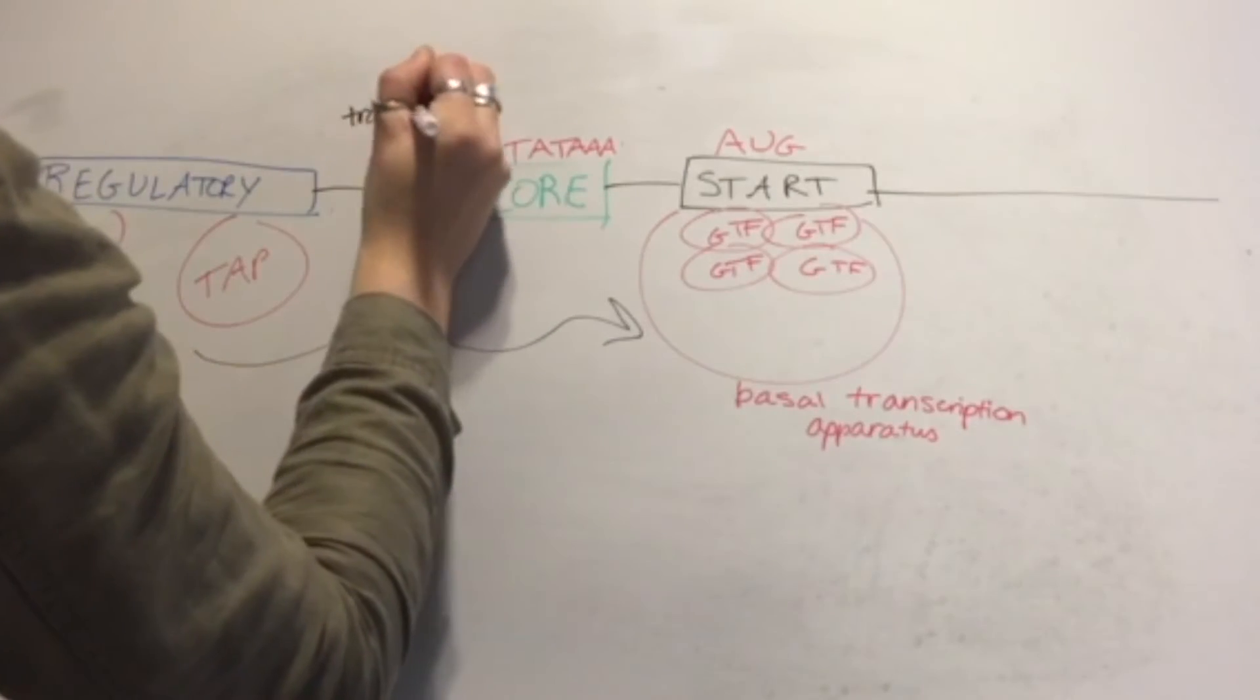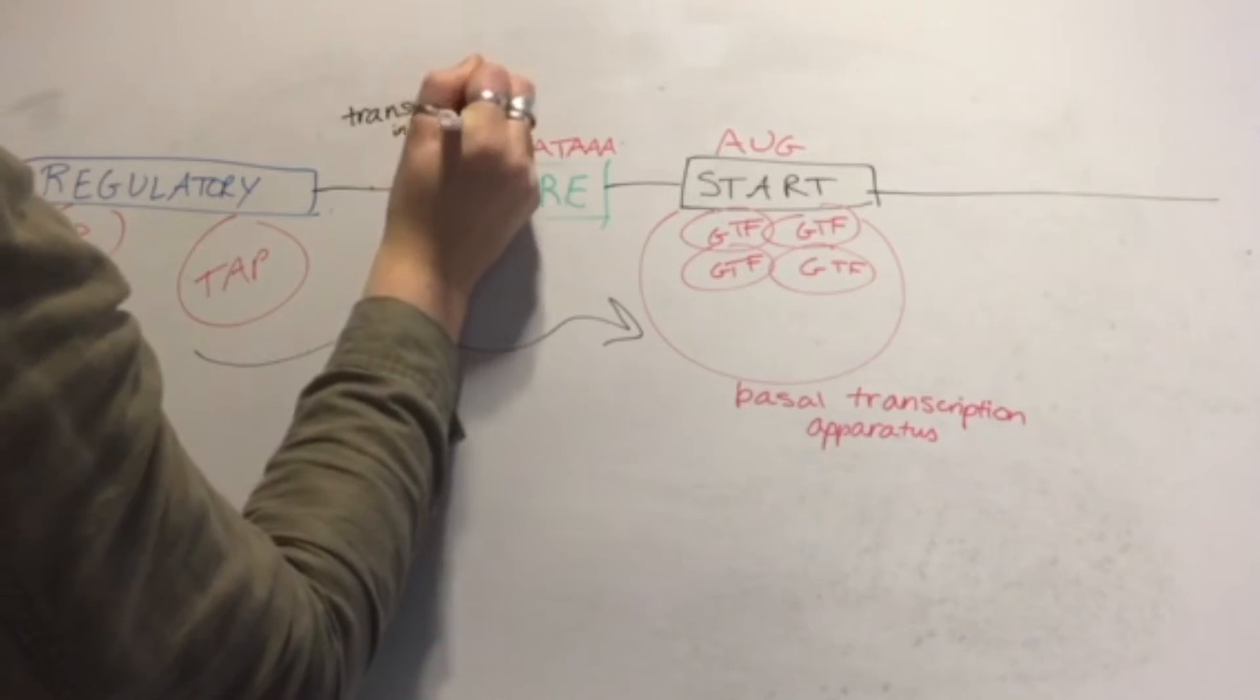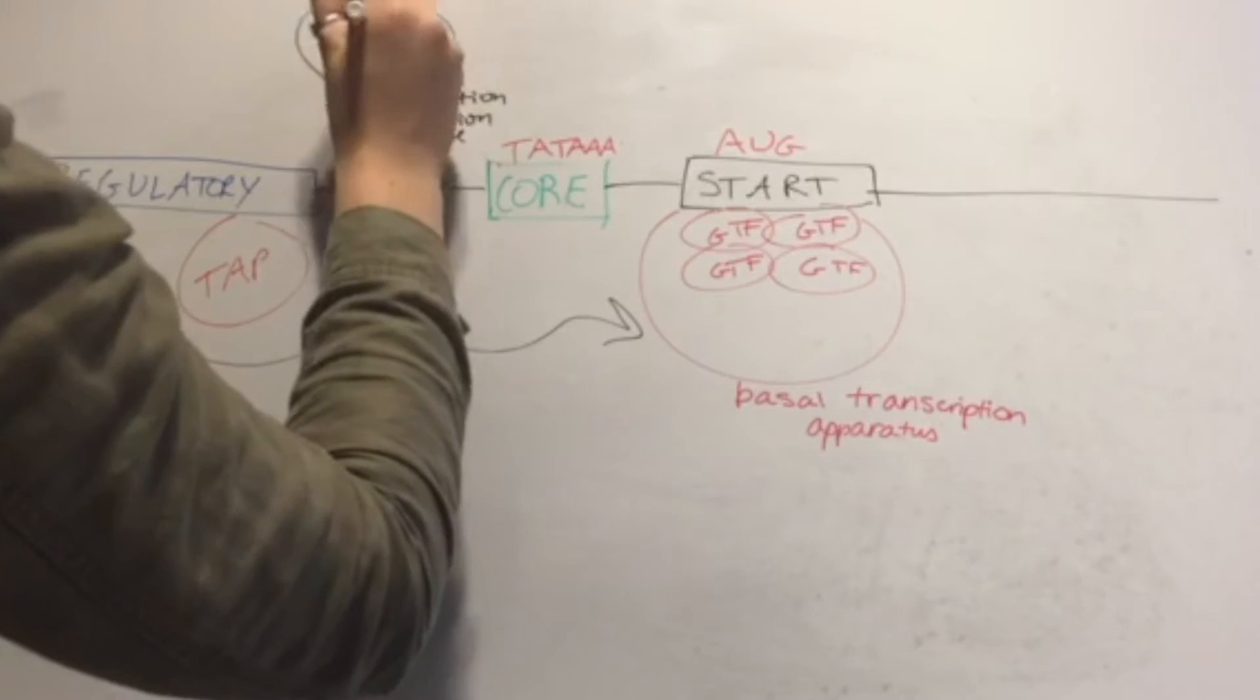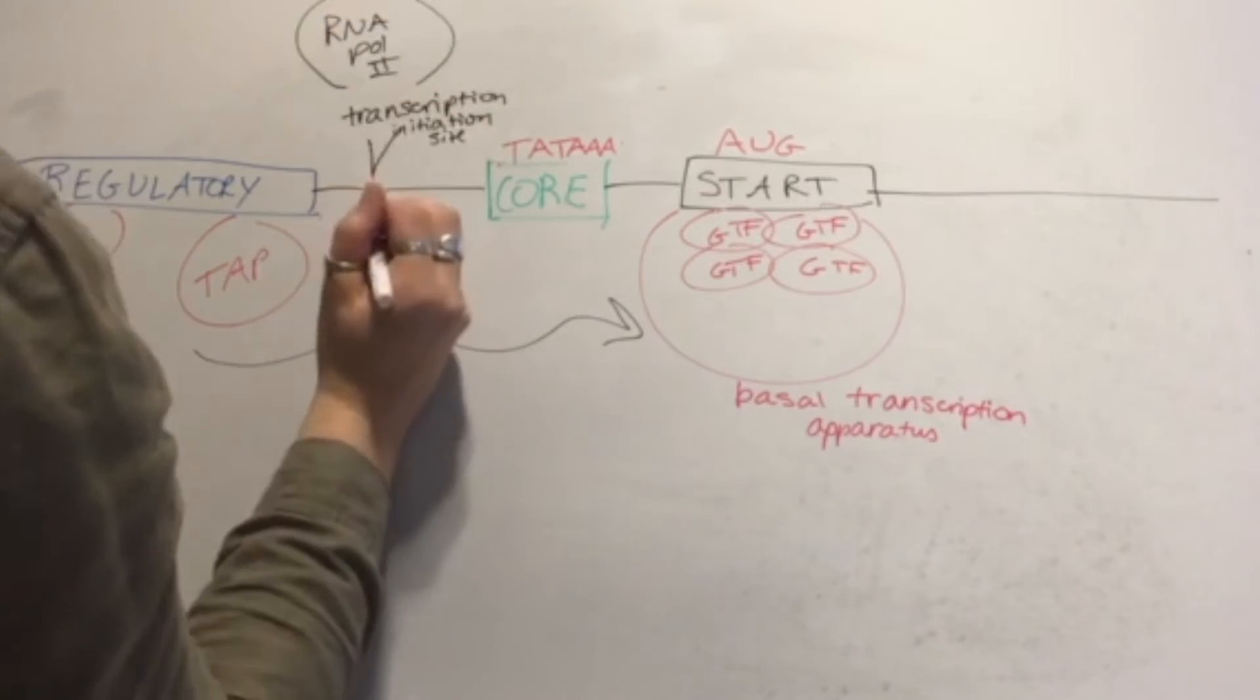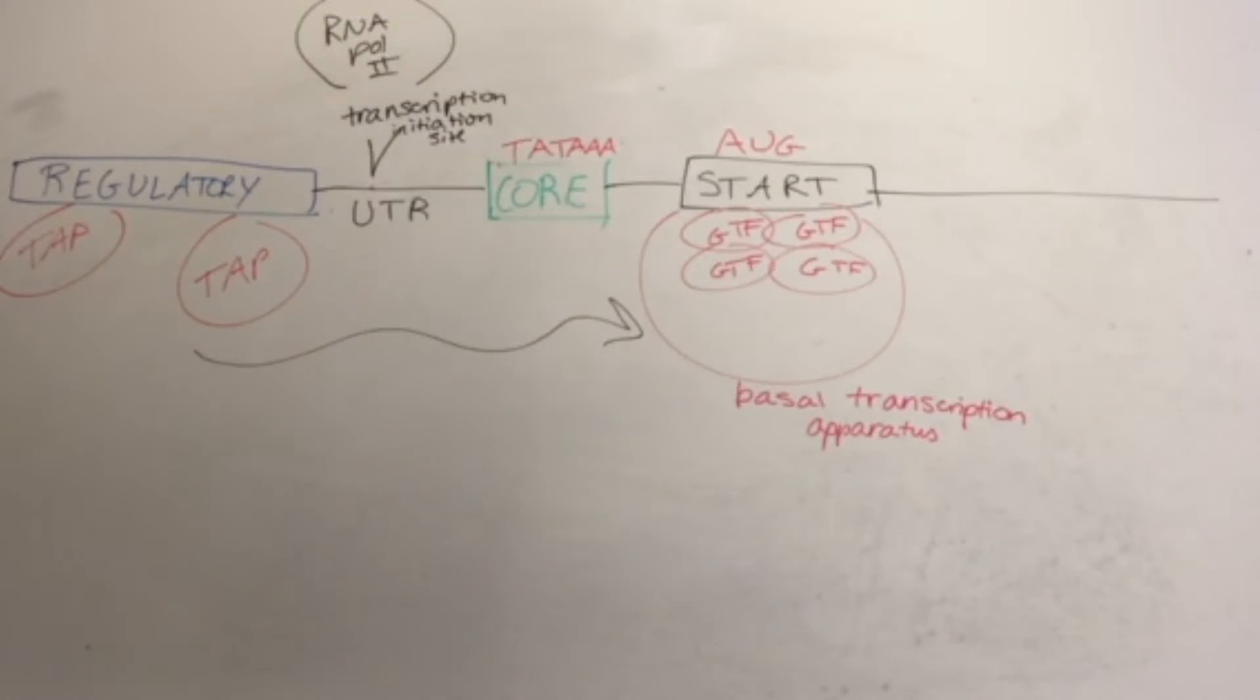So promoters work like this. RNA polymerase II binds to a sequence called the transcription initiation site, which is just upstream of the TATA box in the core promoter. This creates a 5' untranslated region. It then knows where the start of transcription will begin, so it slides down to the start codon.